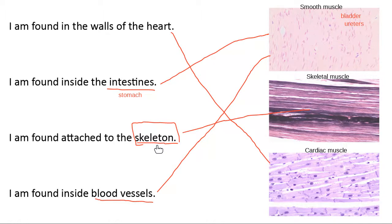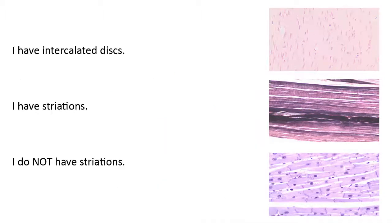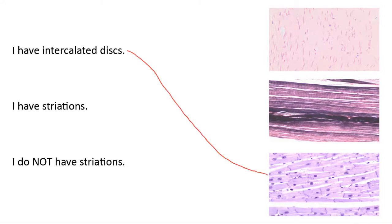Now we flip over to talk about features we see on our different types of muscle tissues. Let's start with intercalated discs. There's just one kind of muscle tissue that has these. That's cardiac muscle — it has intercalated discs. These dark lines we're seeing between the cells are all intercalated discs. The only kind of muscle tissue with intercalated discs is cardiac muscle tissue.